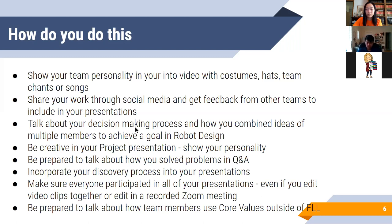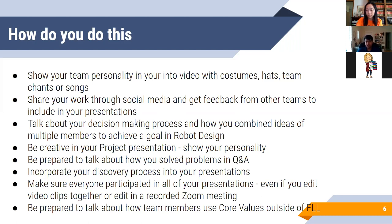Third, talk about your decision-making process and how you combine ideas of multiple members to achieve a goal in robot design. There are different ways you can approach decisions — you can have a democratic process, you can have a trial and error one to see which method works best, or you can have everyone agree on the most effective option. There are many ways to approach problems, but this is a key part in determining how your team functions, and core values judges will be looking for these things.